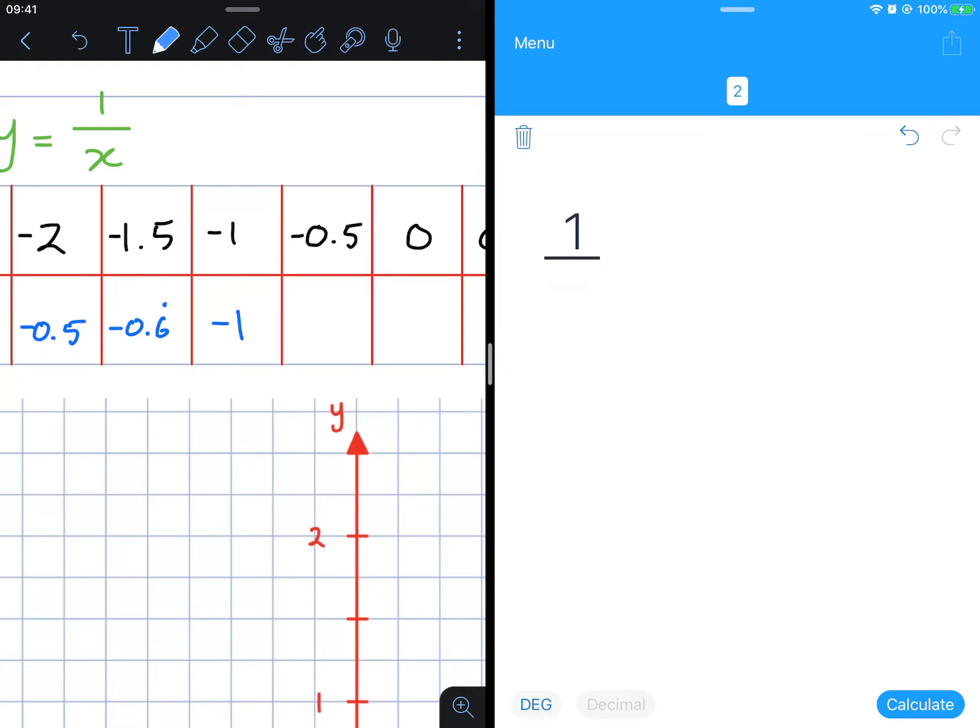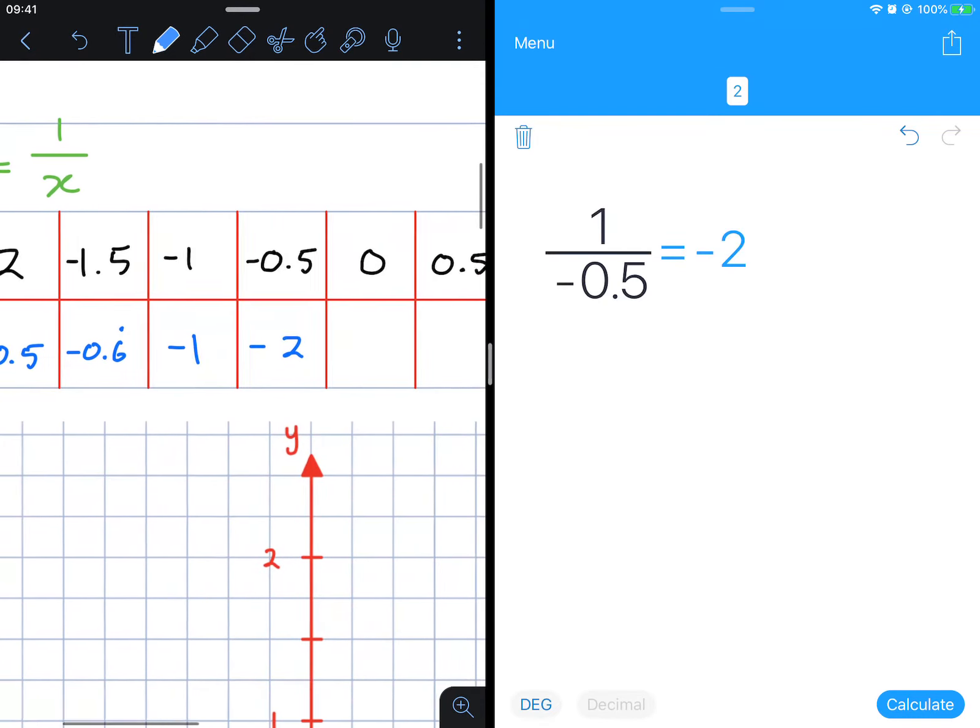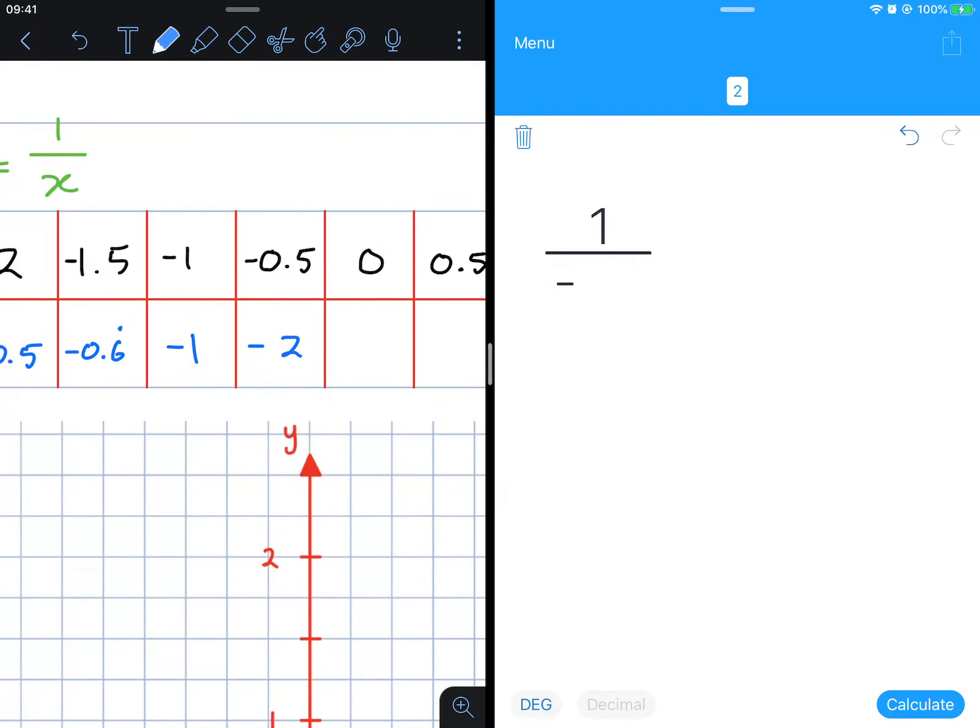Now take a look at what happens when we try and do 1 divided by 0. It won't let me. In your instance you will get something that says math error.